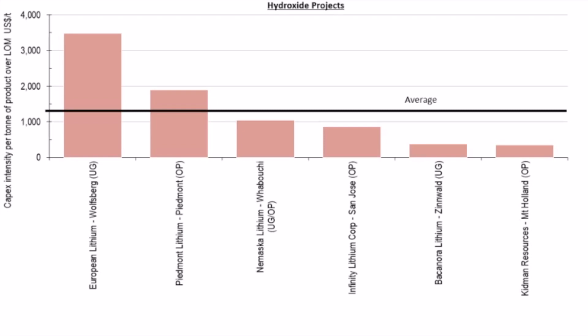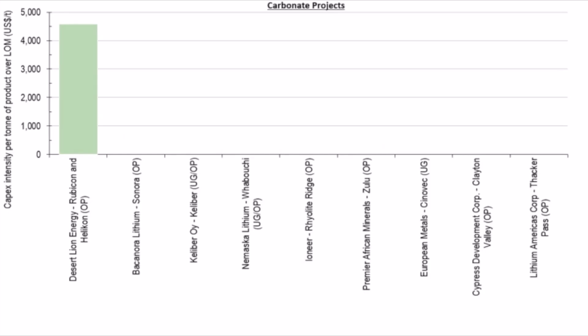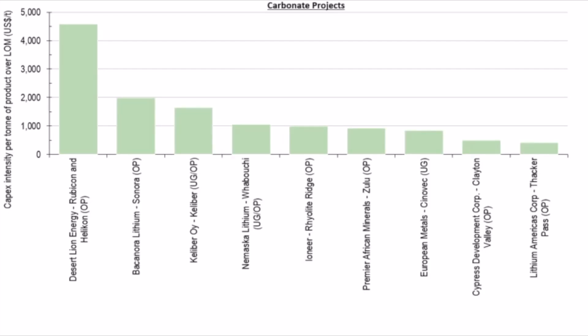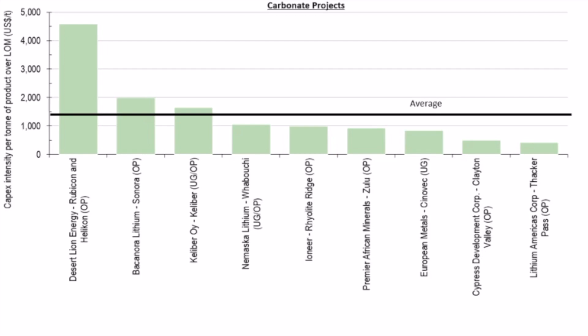Our second chart looks at carbonate projects. Again, the capex intensities of these projects varies considerably, again by an order of magnitude, from 4,600 US dollars per tonne to 400 US dollars per tonne, with an average of 1,400 US dollars per tonne.